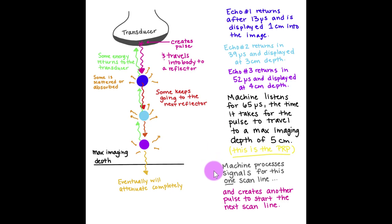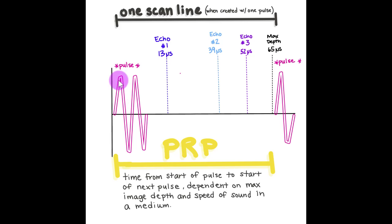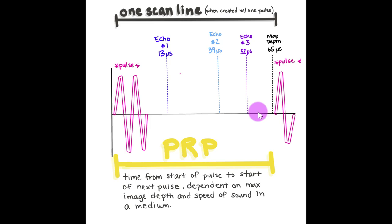The machine takes all the signals from one pulse to create a scan line, then sends another pulse to start the next scan line. A pulse is sent, then we have our waiting period. Echoes come back at certain times during that waiting period until the max depth waiting period is achieved — that's the PRP, the on time and off time to the start of the next pulse. This one pulse and its echoes create one scan line. In reality, the machine is like a big stopwatch that uses sound and echoes to map the body.